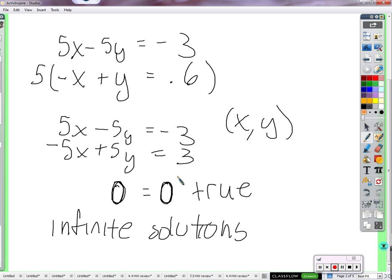If we were to instead get 0 equals anything but 0, 0 equals 1, 0 equals negative 3, 0 equals 3 fourths, then that means that there's no way that these two equations will ever both be equal with the same x and y. There are no solutions. So since 0 equals 0, that's true. We get infinite solutions. If we were to get 0 equals 2, which is false,